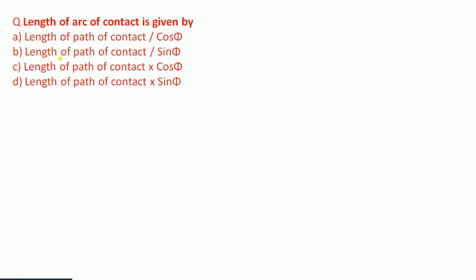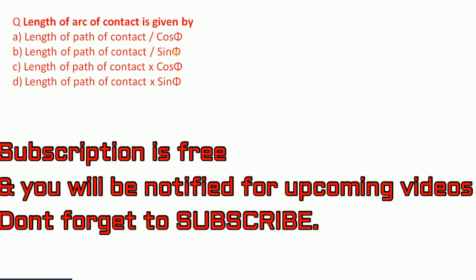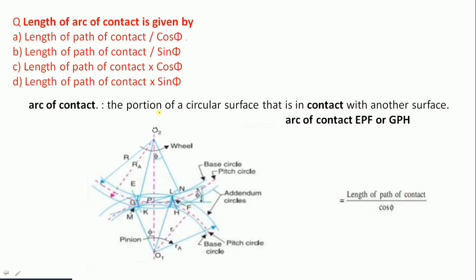Question 9: The length of arc of contact is given by — length of path of contact / cos φ, / sin φ, × cos φ, or × sin φ. The arc of contact is the portion of the circular surface in contact with another surface, shown as arc EPF in the figure. The arc of contact equals the length of path of contact divided by cos φ. Therefore option A is correct.